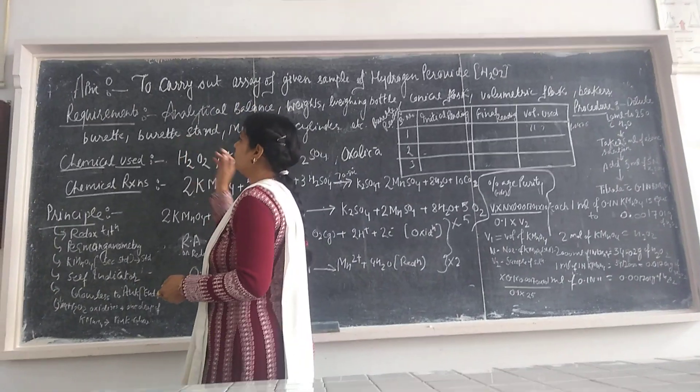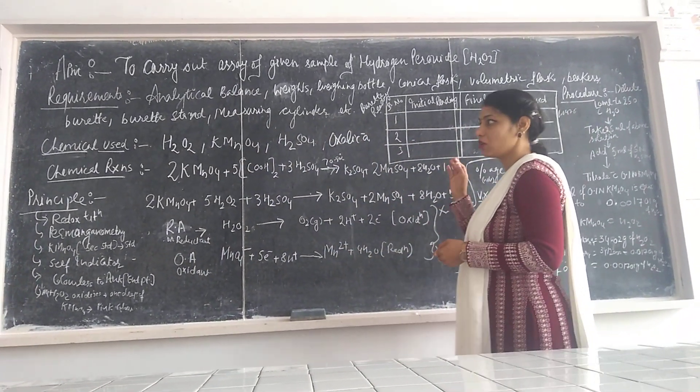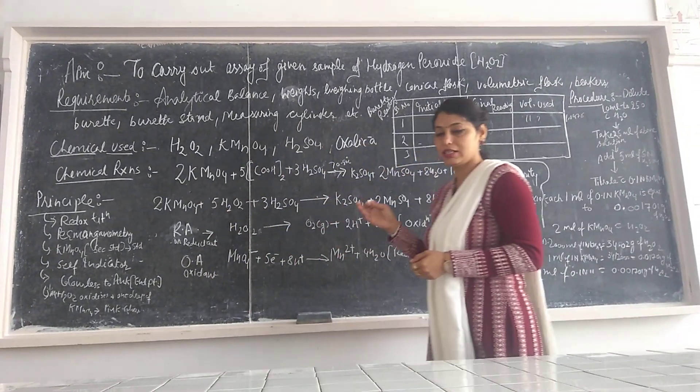For this particular practical we will need analytical balance, weights, weighing bottle, conical flask, volumetric flask, buret, buret stand, pipette stand, and beakers etc.